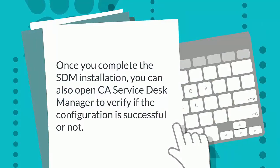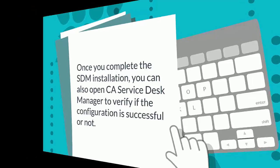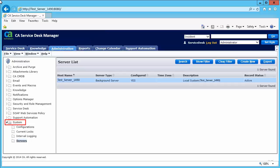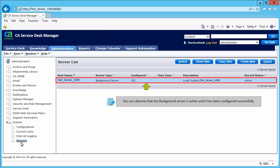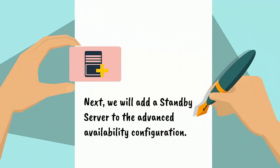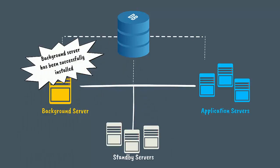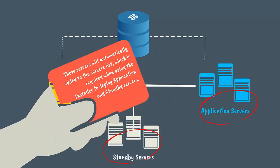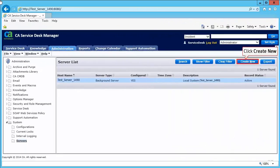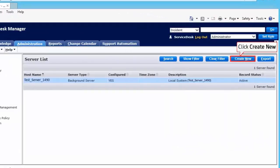Once you complete the SDM installation, open CASDM Manager to verify the configuration. Click the Administration tab, under the System option click Servers — you can observe that the background server is active and configured successfully. Next, we will add a standby server to the advanced availability configuration. Application and standby servers are first identified within the SDM web console on the CA Service Desk Manager additional servers detail screens. Once the background server is installed, these servers will automatically be added to the service list.